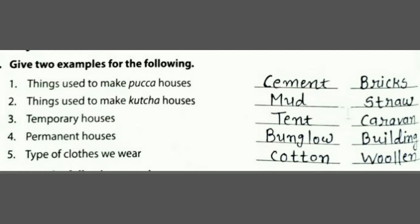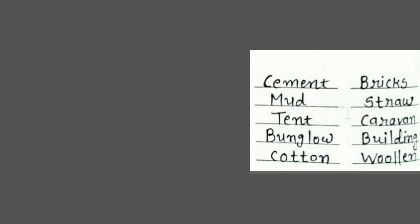Then 'Give two examples': things used to make pukka house — answer: cement, bricks, and also stones and sand. Things used to make kuccha house — answer: mud and straw, and also stick or wood. Temporary houses examples — tent, caravan, house boat.